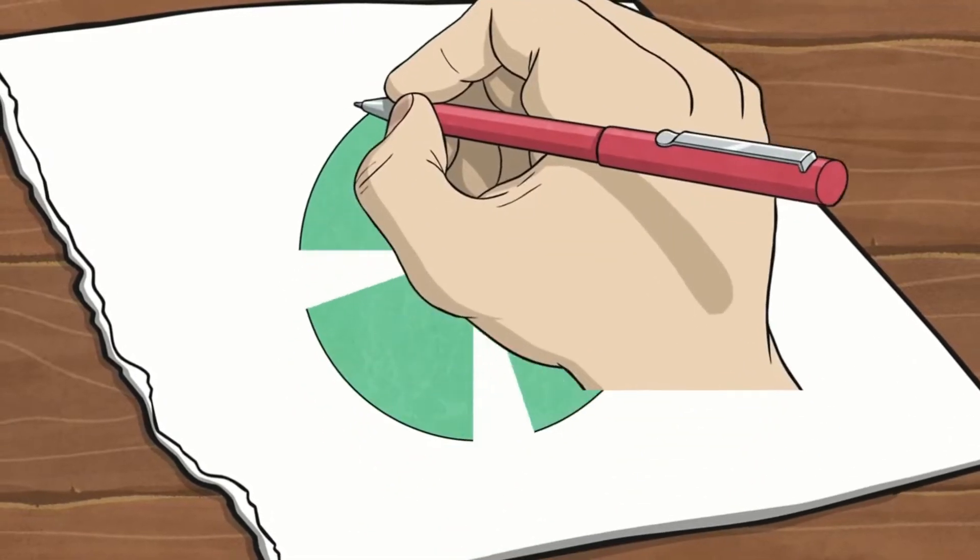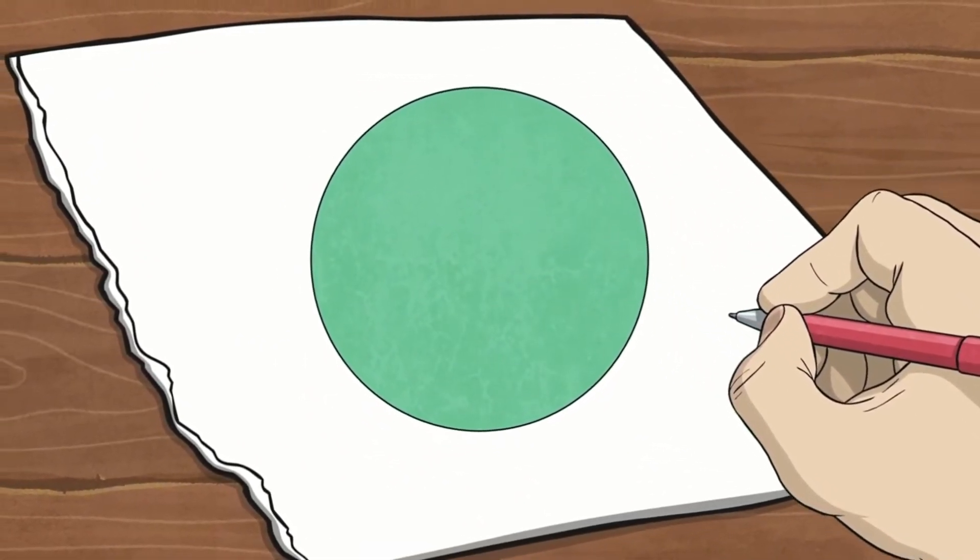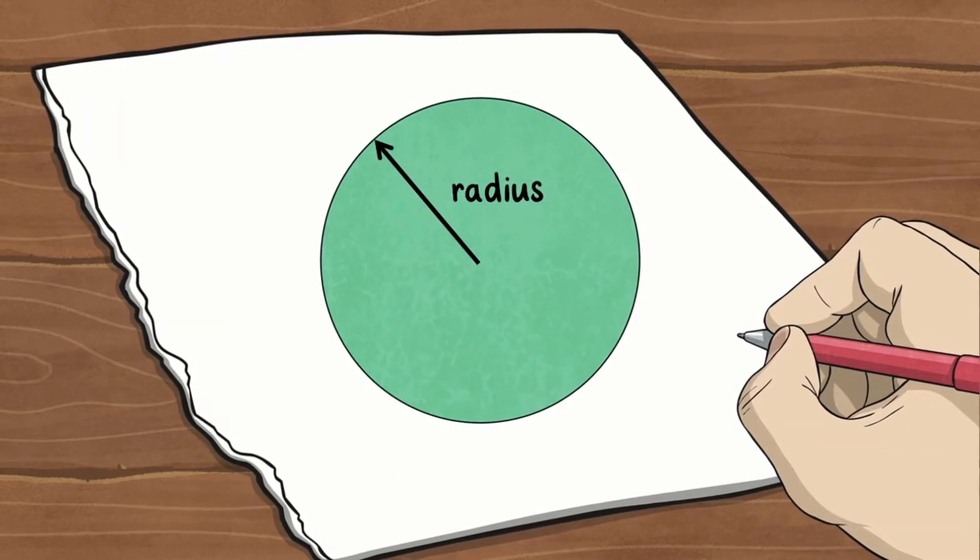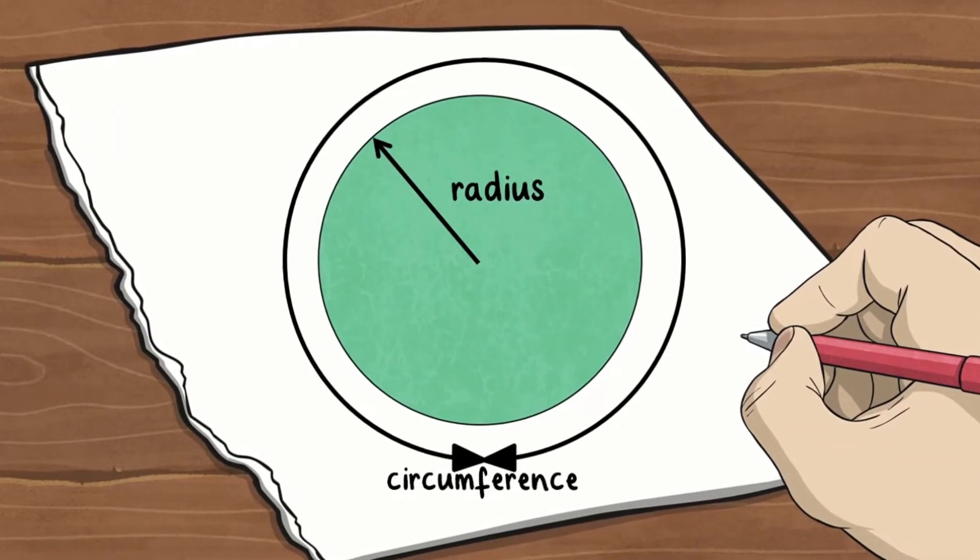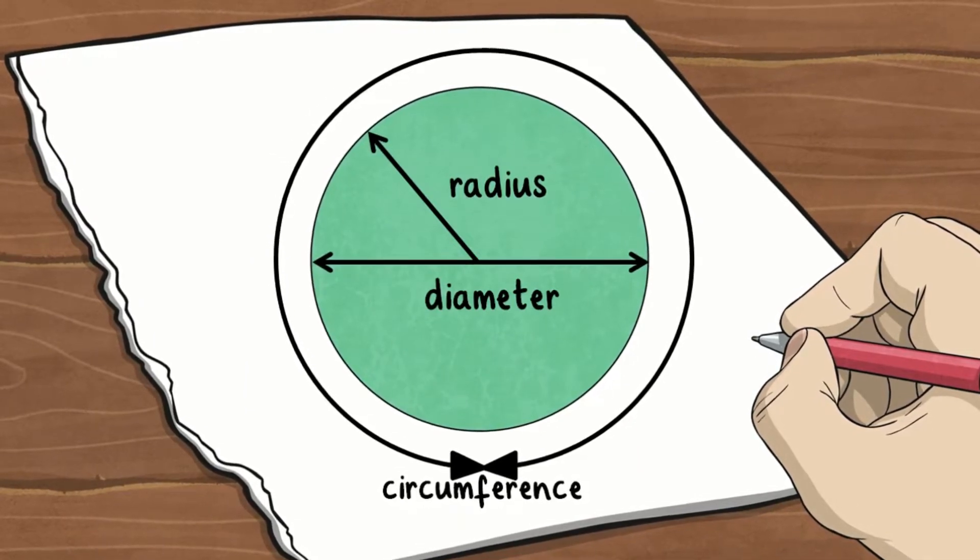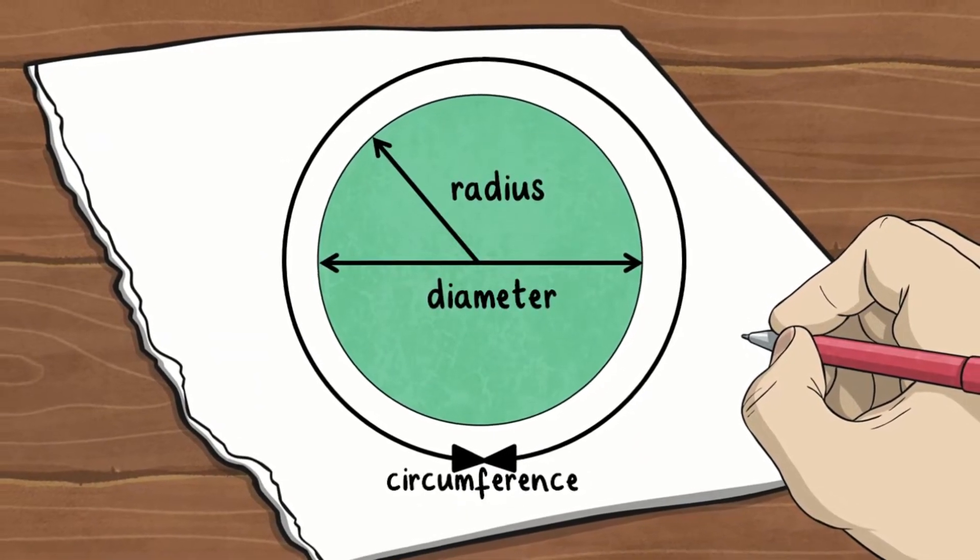A radius is a key word your children will learn when exploring circles. It refers to the distance from the centre of the circle to any point on the edge of the circle, the circumference. It's half the length of the diameter which reaches across from one side of the circumference to the other through the centre.